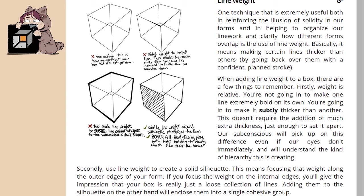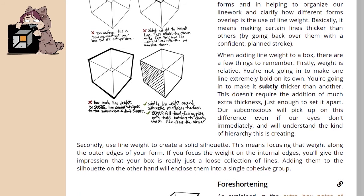Now, line weight. One technique that is extremely useful both in reinforcing the illusion of solidity in our forms and in helping to organize our line work and clarify how different forms overlap is the use of line weight. Basically, it means making certain lines thicker than others by going back over them with a confident, planned stroke. When adding line weight to a box, there are a few things to remember. Firstly, weight is relative. You're not going in to make one line extremely bold on its own; you're going in to make it subtly thicker than another. This doesn't require the addition of much extra thickness, just enough to set it apart. Our subconscious will pick up on this difference even if our eyes don't immediately, and we'll understand the hierarchy this is creating.